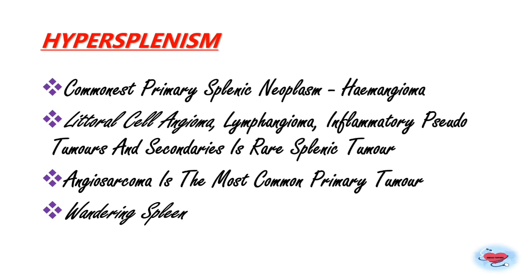Primary malignant spleen tumors are exceedingly rare; angiosarcoma is the most common. Wandering spleen occurs due to failure of formation of the suspensory ligament of the spleen, leading to malpositioning. It is caused by failure of the dorsal mesogastrium to fuse with the posterior abdominal wall, resulting in a long splenic pedicle. This predisposes to torsion and recurrent ischemia, is more common in females, and CT scan is diagnostic.